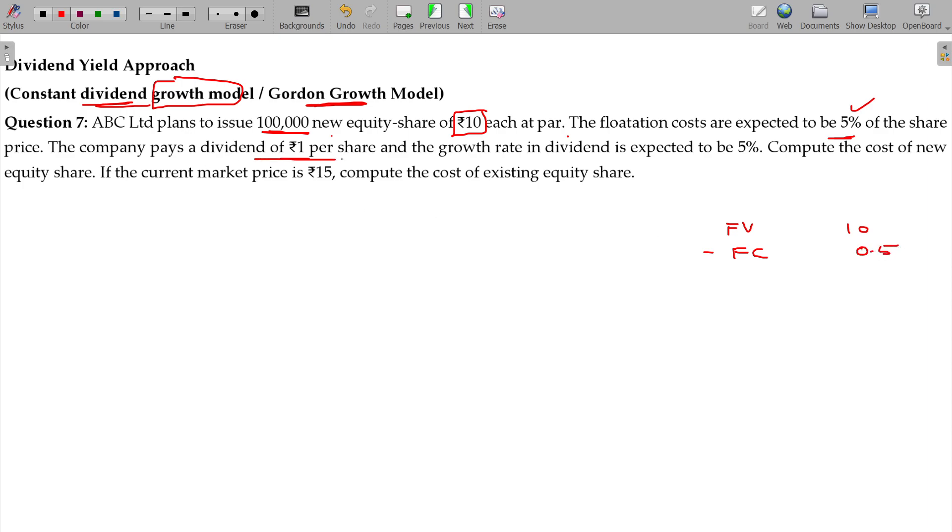The company pays a dividend of ₹1 per share and the growth rate of the dividend is expected to be 5%. That is, the dividend by the end of first year being ₹1, as well as G expected being 5%.